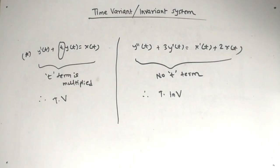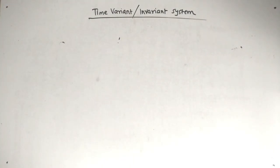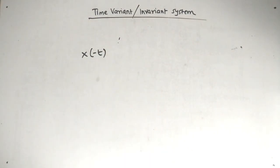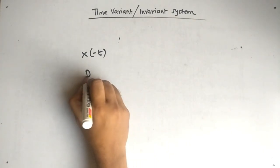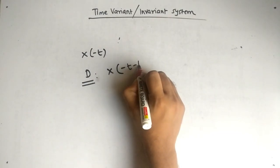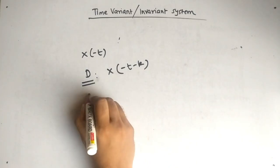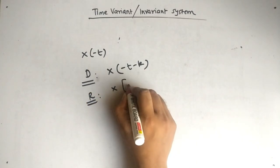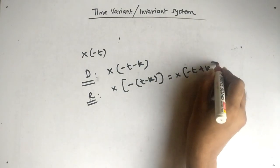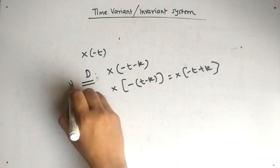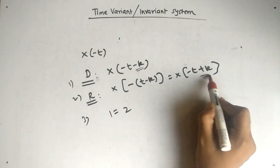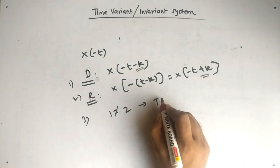One more important case: x(−t). When we delay, x(−t) changes to x(−t − k). But when we replace t by (t − k), it becomes x(−(t − k)) = x(−t + k). Comparing step one and step two: one has −k and the other has +k. So they are not equal — it is a time variant system.